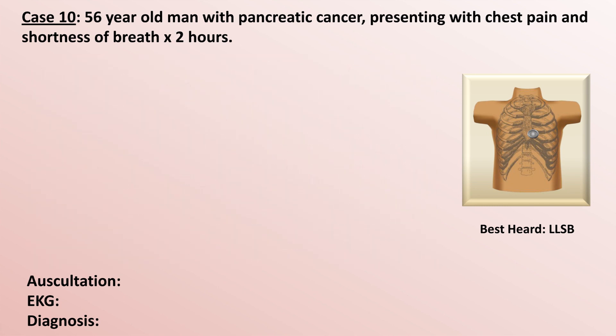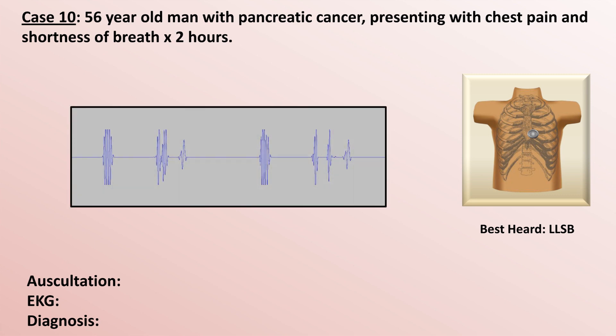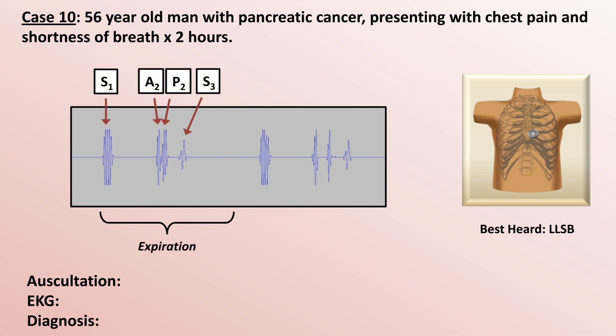The pressure cycles occur during expiration, when there is at least one and maybe two extra sounds. The easier to identify is the low-pitched S3. The slightly harder to appreciate finding is that S2, which should not be audibly split during expiration, actually is here.